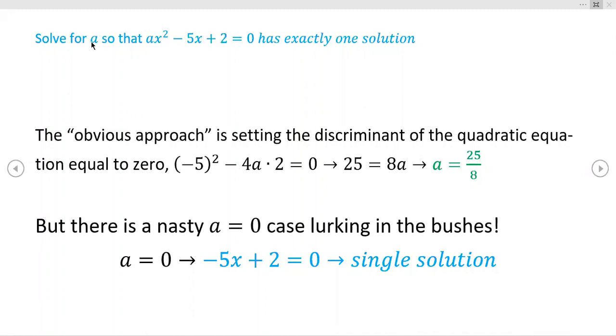And it says find, it says solve for A. That's kind of peculiar. A is the only constant in this equation. But solve for A so that ax² - 5x + 2 = 0 has exactly one solution.